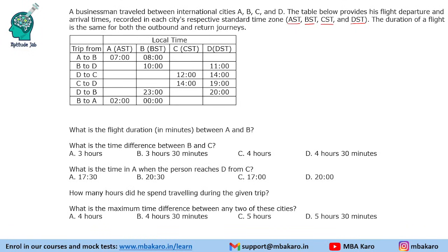The duration of a flight is the same for both the outbound and return journeys. So if the person is going from A to B, the return will take the same time. The person goes from A to B, then B to D, then D to C, C to D, D to B, and B to A. Based on this, we need to answer these questions.